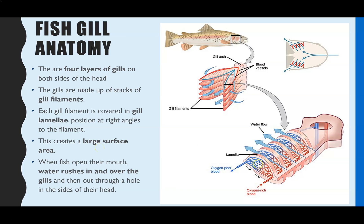Diffusion of gases only happens on the lamellae. Water rushes in through the mouth, flows over the gills, and exits through a tiny gap in the side of the head where the gills are. We'll now focus on how the capillaries and lamellae provide the three gas exchange features.